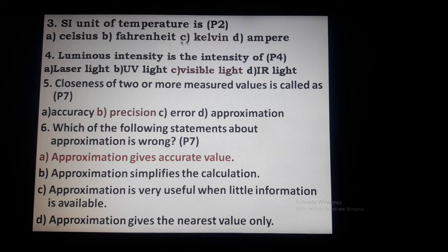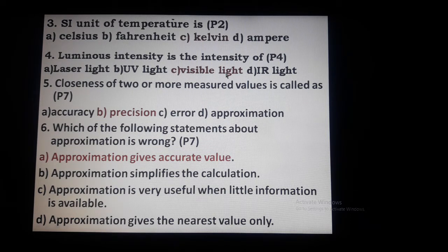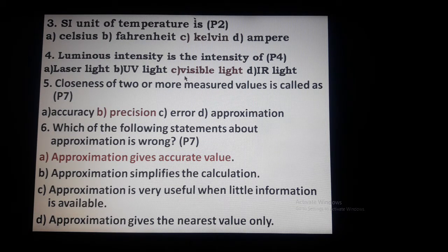The next question: luminous intensity is the average intensity of visible light. Visible light means VIBGYOR — violet, indigo, blue, green, yellow, orange, red — these 7 colors. Light beyond what our eyes can see is also there. So luminous intensity is the average intensity of visible light.